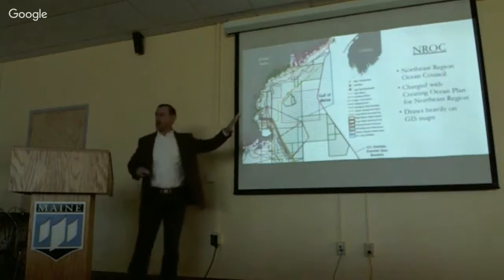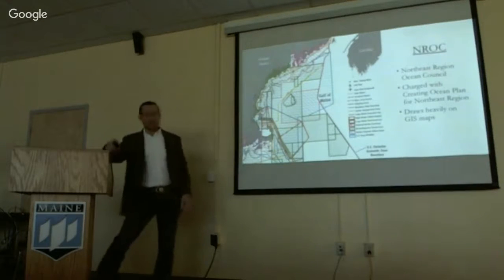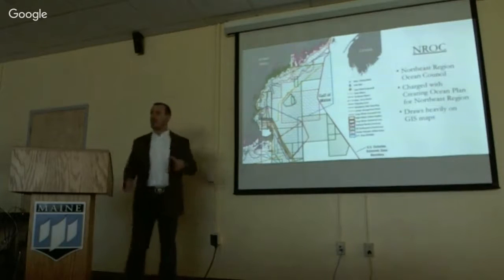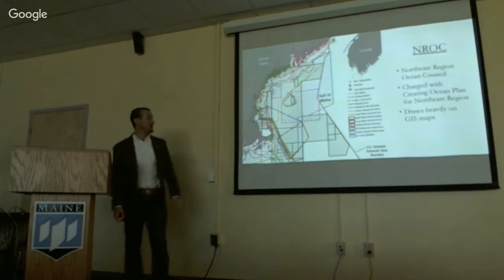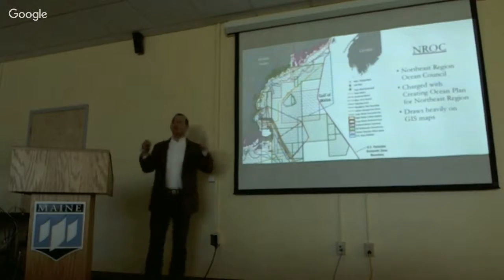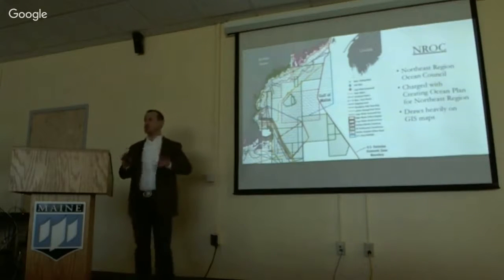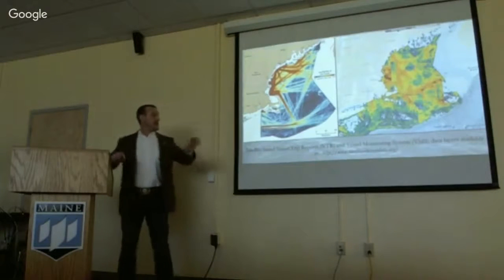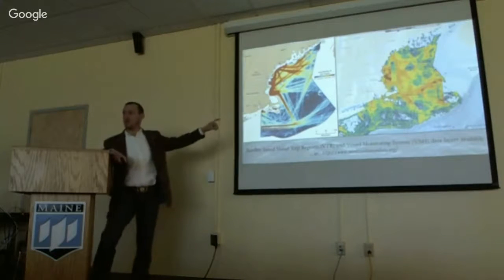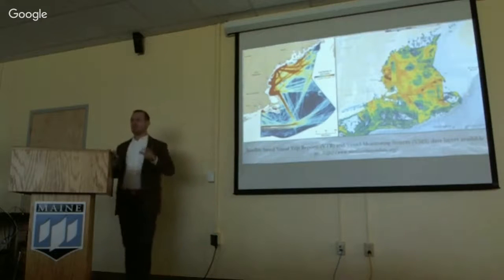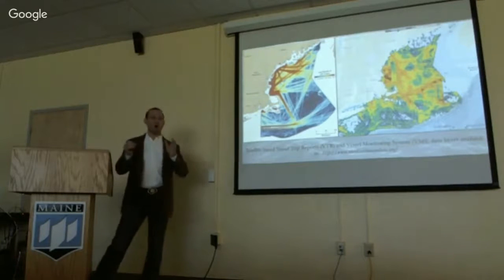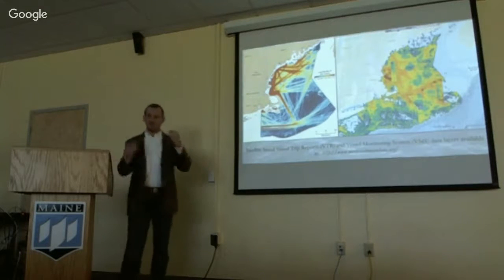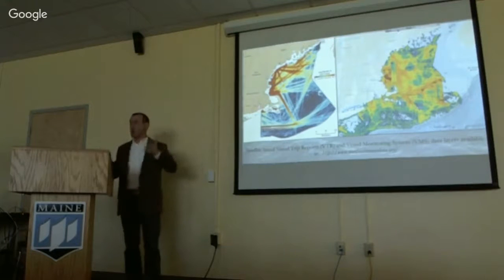NROC is charged with establishing the regional ocean plan and faces significant complexity. This map shows some — not all — of the ocean uses involved in the Northeast Region, including government, natural resource extraction, and proposed wind sites. NROC draws heavily on GIS maps showing where people are using the ocean. We have on the left a map of shipping lanes for the northeastern region, and on the right a map of the multi-species groundfish fishery. These maps rely heavily on vessel monitoring systems or vessel trip reports that use GIS transponders on fishing vessels.